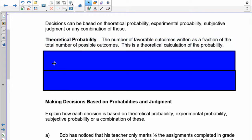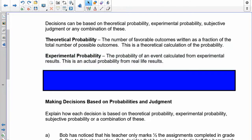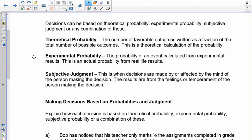So here are the three types right here. The theoretical probability is the number of favorable outcomes written as a fraction of the total number of possible outcomes. This is a theoretical calculation of the probability. So if you make a decision based on the theory of probability, or the calculations, that's called a decision based on theoretical probability. The second way you can make a decision is based on experimentation. So when you do an experiment, the probability that you get will actually frame your decision. You make a decision based on these types of things. The third one is called subjective judgment. This is when decisions are made, or made by, or affected by the mind of the person making the decisions. Sometimes this is referred to as instinct, or a gut feeling that you want. These results are from the feelings or the temperament of the person making the decision. They have nothing to do with theory, and they have nothing to do with experimental probability.